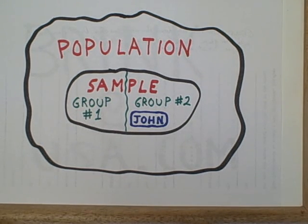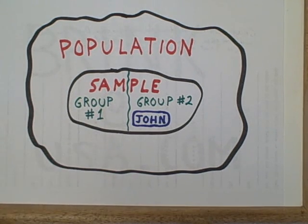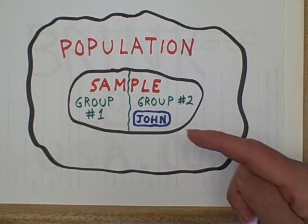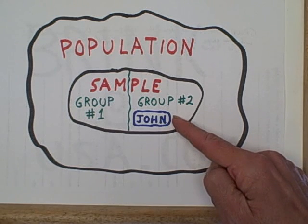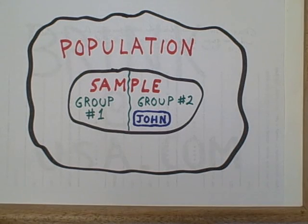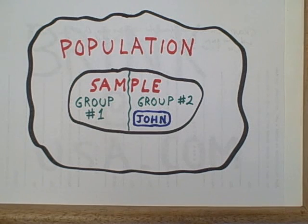Within our sample, let's suppose that we made use of existing groupings of subjects. Group number one would be Democrats, group number two would be Republicans, and we can compare these two parts of the sample — group one compared to group two. Notice that John is in group two. John is a Republican. John is in our sample because he completed one of our questionnaires, and John is in the larger population because he is one of the voters.